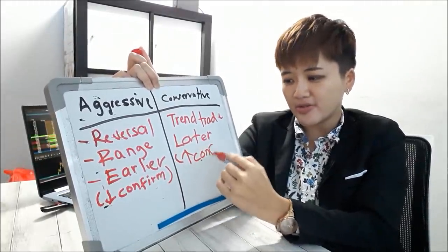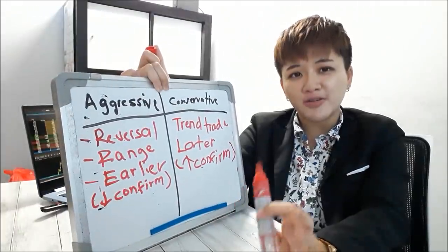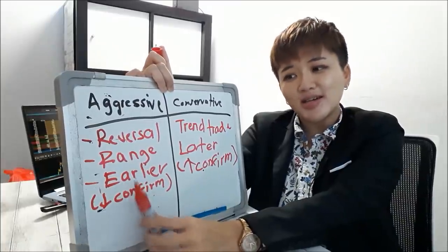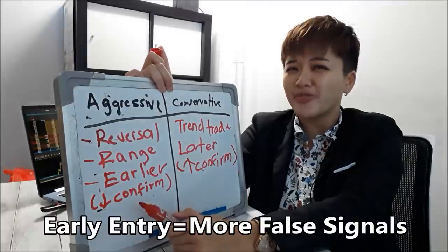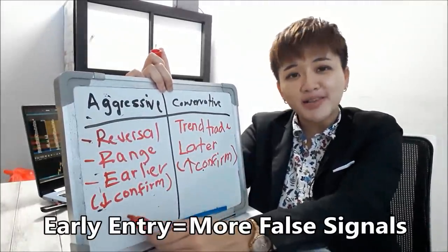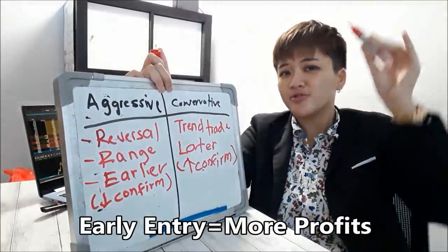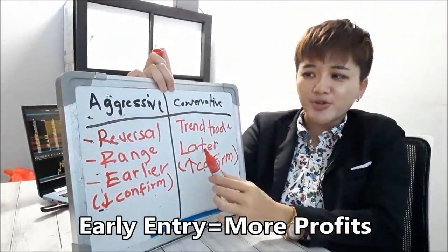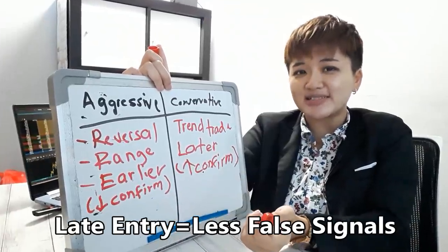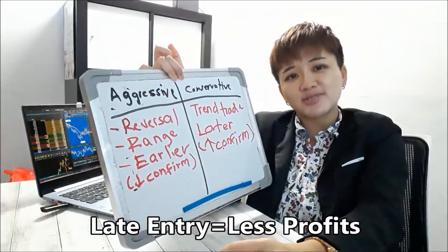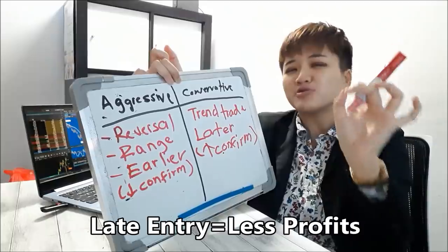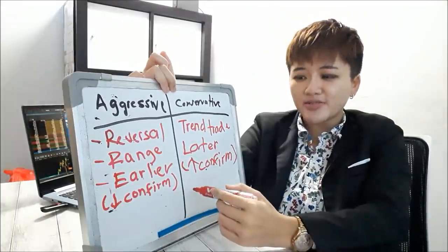There's no right or wrong as to whether it's better to enter earlier or later. The problem with entering earlier with less confirmation is that you might get a false signal or false breakout. But if the trade works out, you can get more profits. If you're a conservative trader and enter later, you get more confirmation but harvest less profit, because by the time you enter it's a little later.